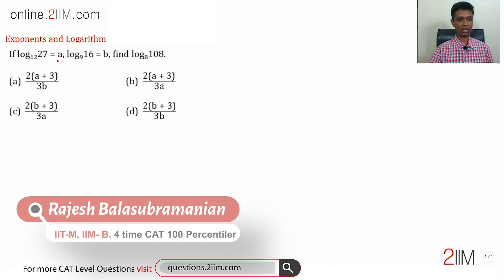log 27 to the base 12 is a, log 16 to the base 9 is b, log 108 to the base 8, what is that equal to?